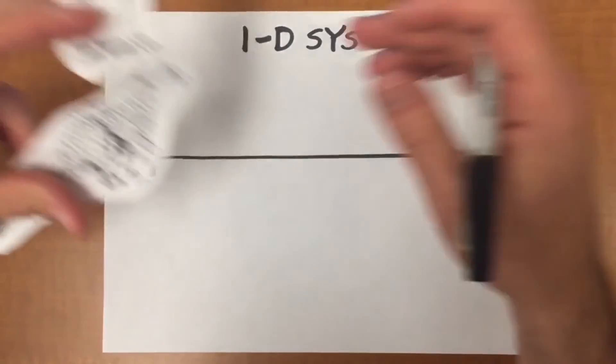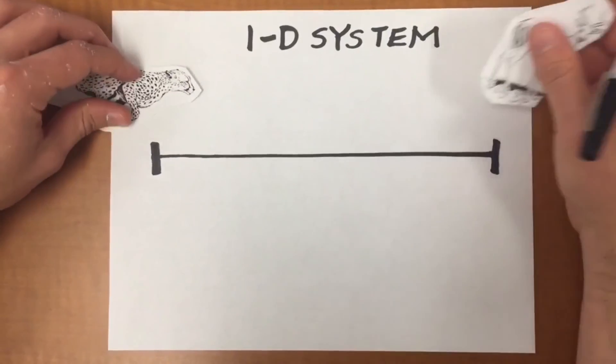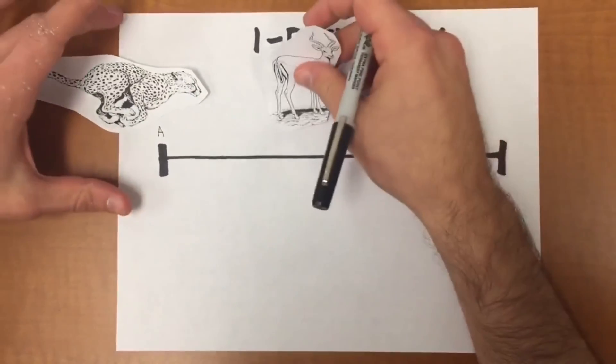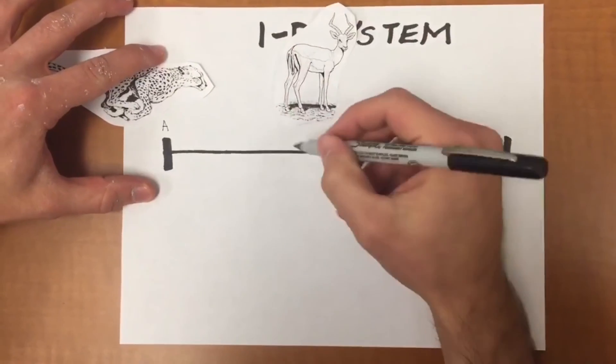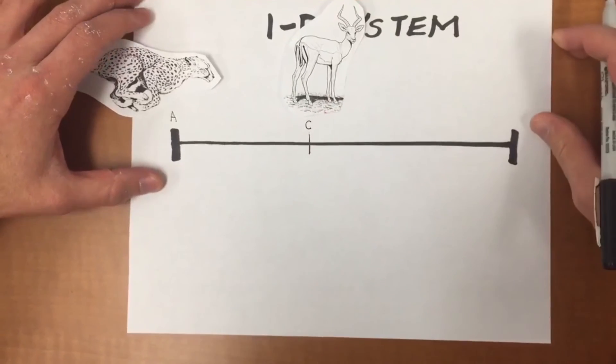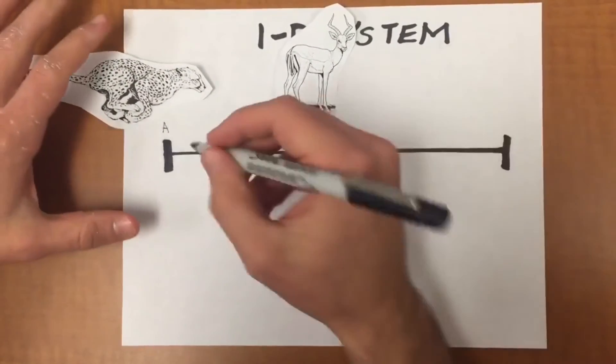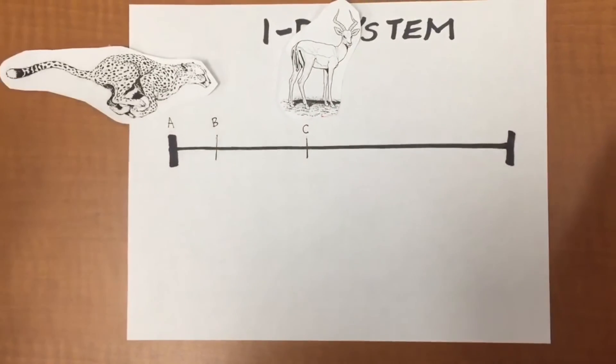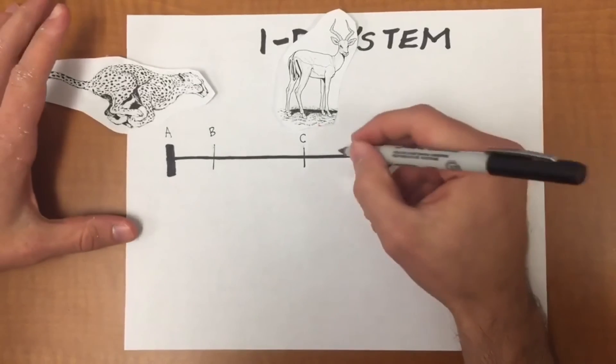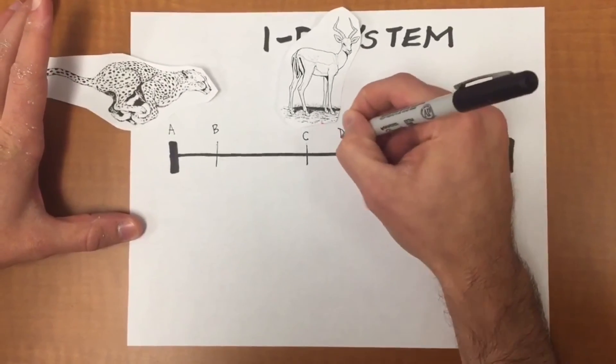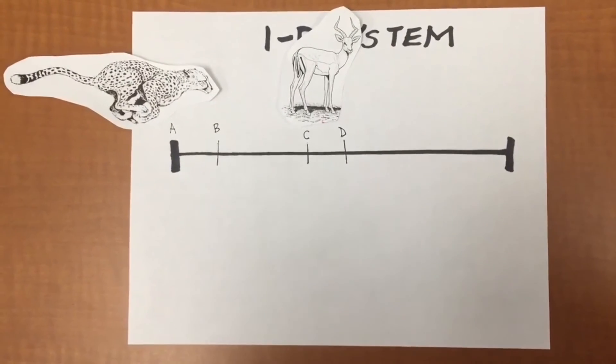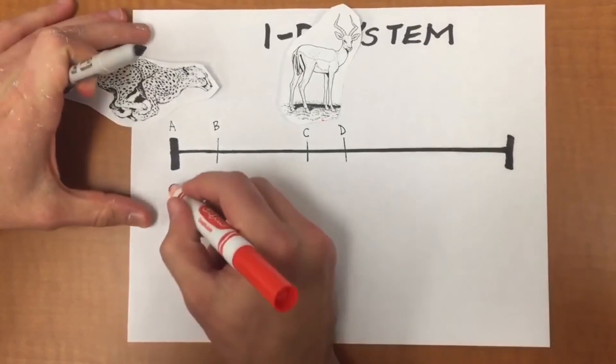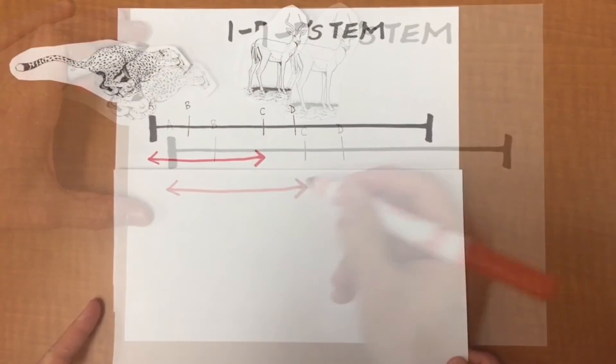Now before we attempt to solve this problem mathematically, we're going to draw a picture. Let's say that the cheetah starts right here. We're going to call this point A. Likewise, the gazelle starts a certain distance away from the cheetah. Let's say right here. We're going to call that point C. Now the cheetah accelerates for a given distance and a given period of time. That distance we're going to call the distance between point A and point B. Likewise, the gazelle only accelerates for a certain distance before reaching top speed. We're going to call that distance the distance between point C and point D. What we're about to solve is the maximum distance the cheetah and gazelle can be away from each other in order for the gazelle to still get caught. That distance is the distance between point A and point C.